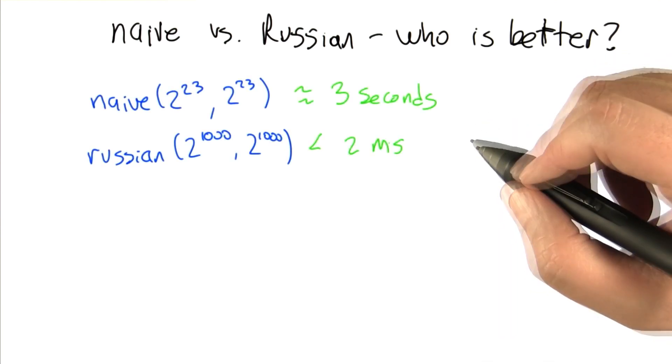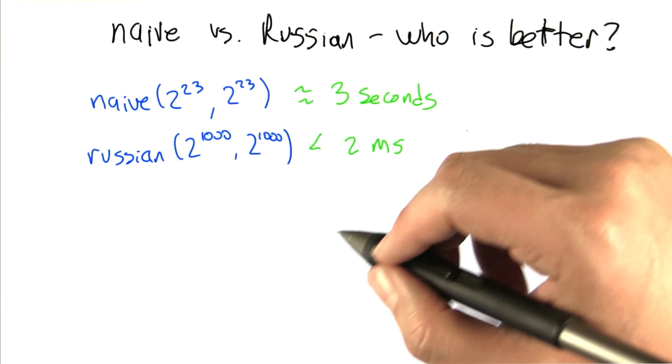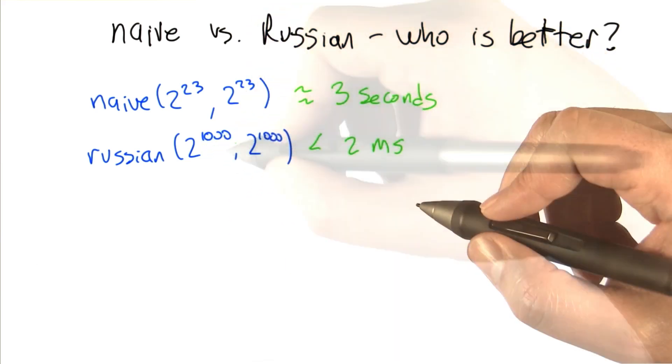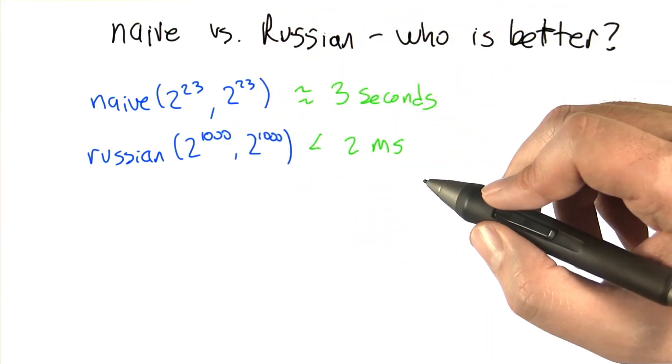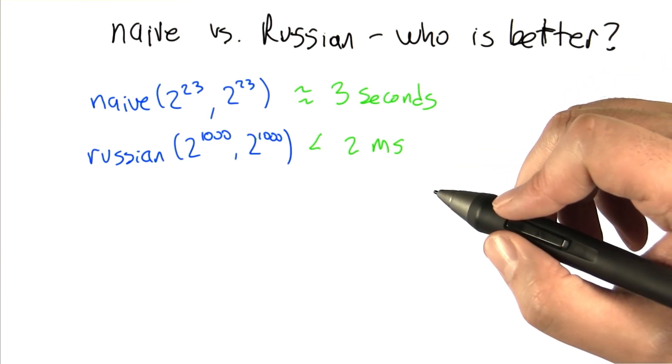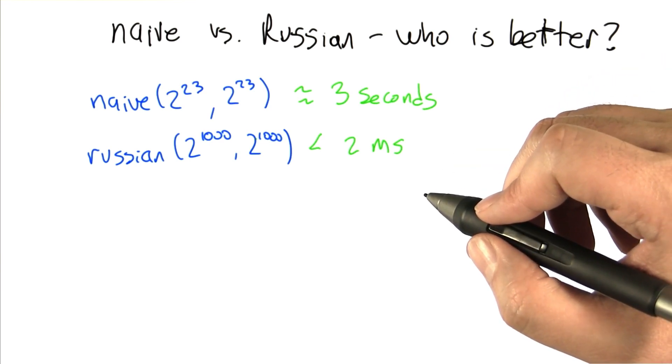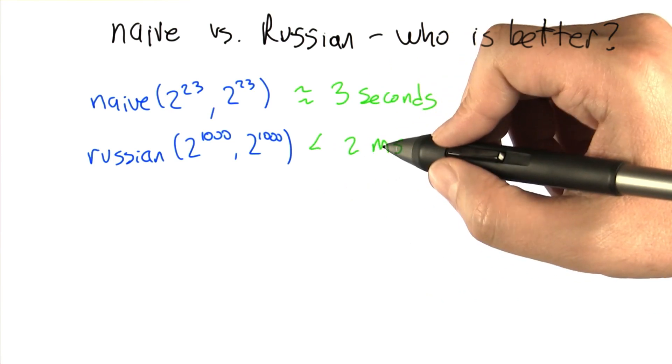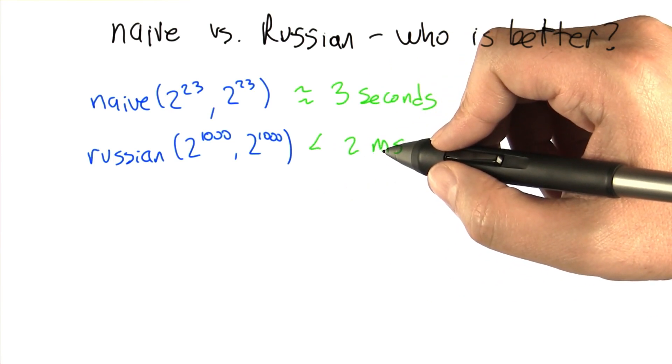So I wanted to show you a plot of the running time of Russian for a range of different values for squaring. So Russian of n, n for lots of different values of n. But the plot was really uninteresting, and the reason was that I just couldn't for the life of me get it to take more than two milliseconds to multiply two numbers together.